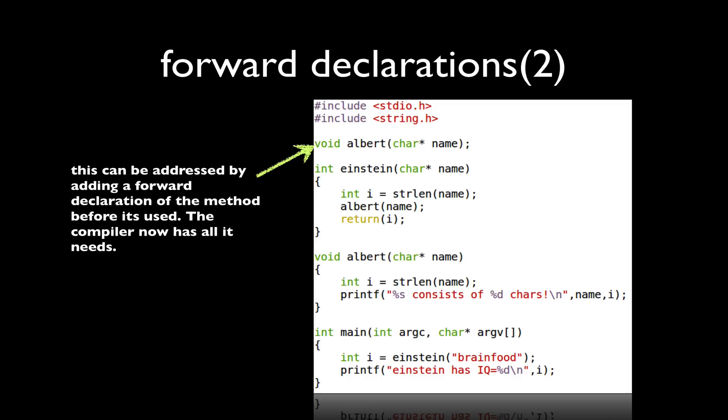And this is exactly what happens in those header files above. So when I include standard io.h and string.h, what those files contain is prototypes without the implementations, exactly as I have the void Albert prototype defined at the top of this source file.